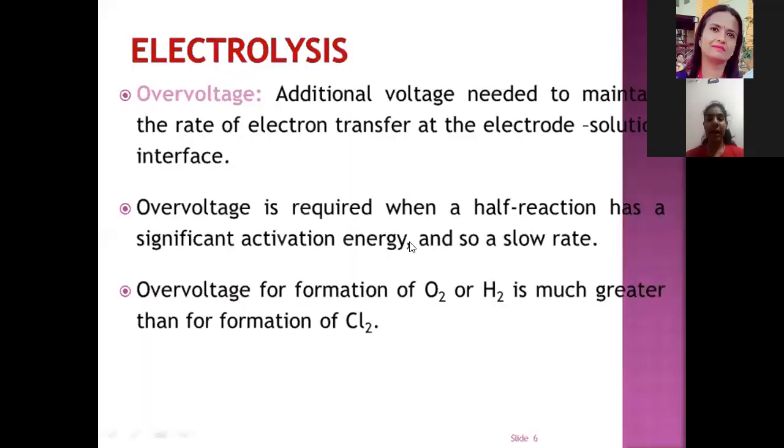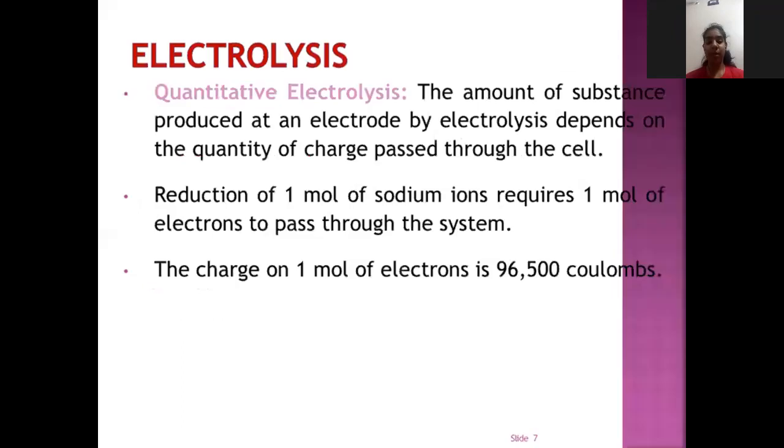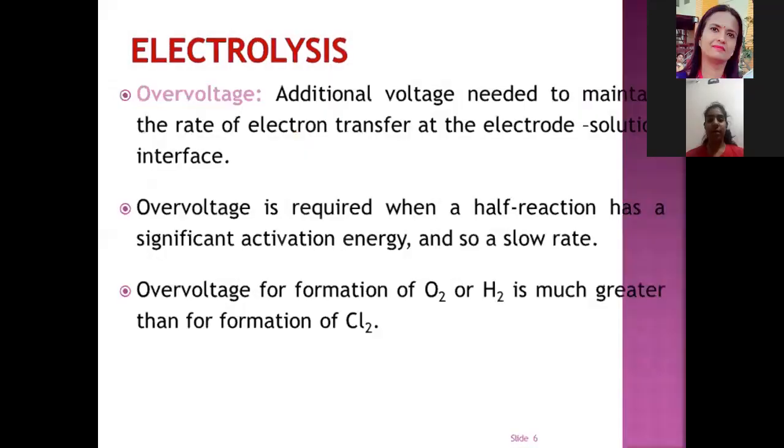Additional voltage needed to maintain the rate of electron transfer at the electrode. Overvoltage is required when a half reaction has a significant activation energy and so a slow rate. Overvoltage for formation of O2 or H2 is much greater than for formation of Cl2.